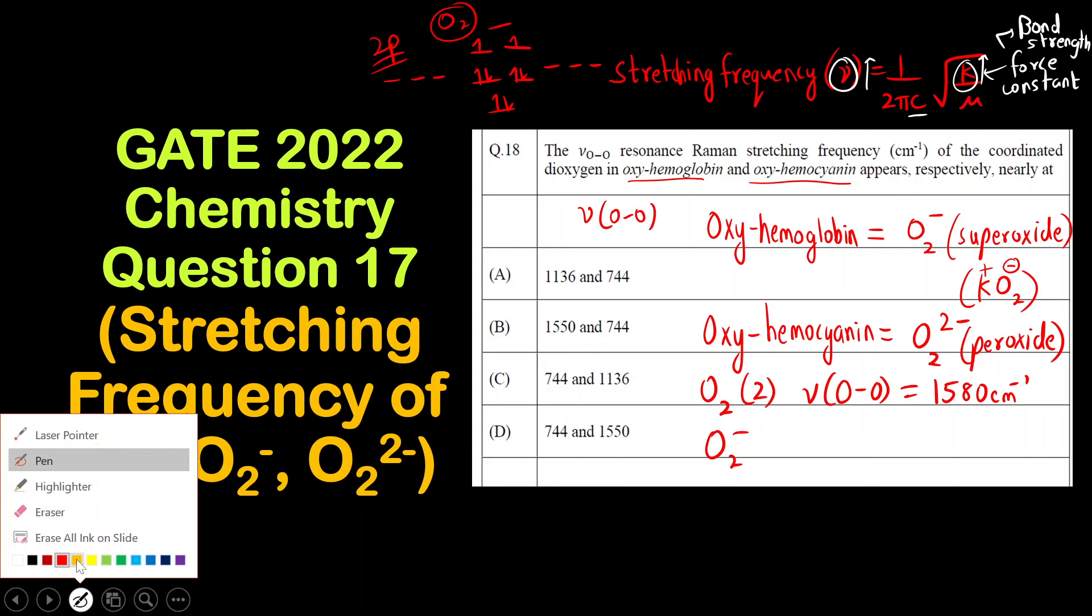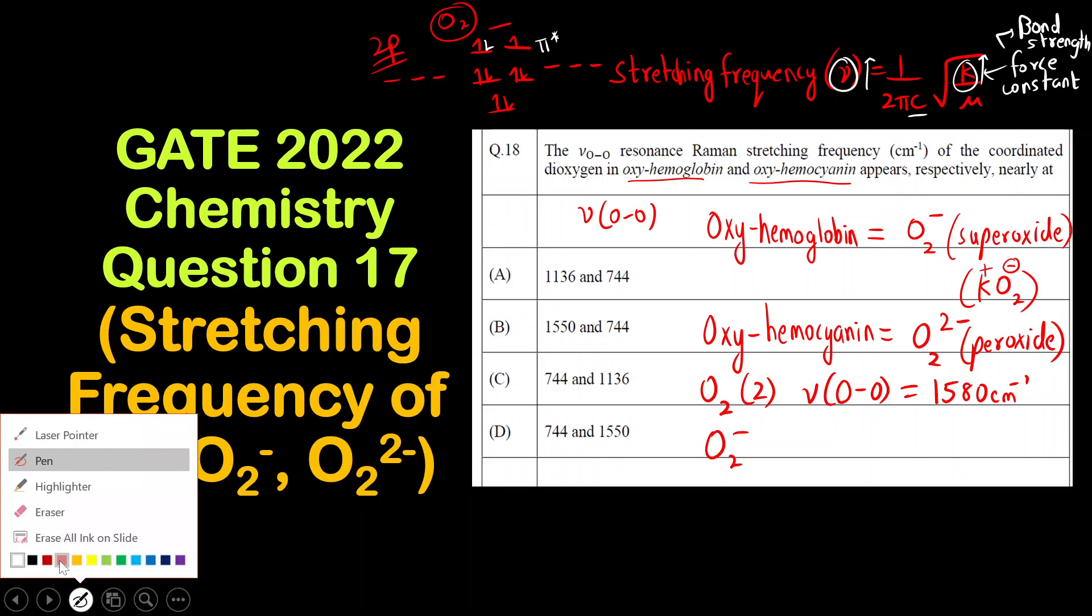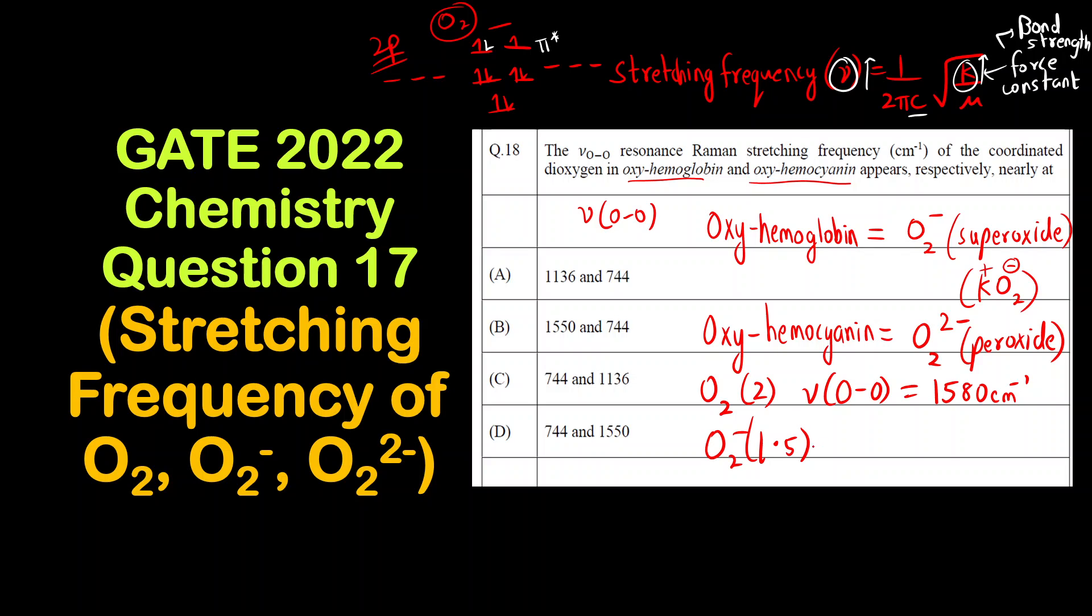Now O2 minus means we are adding an electron in the unstable π* orbital, the anti-bonding orbital, so the bond order will decrease. O2 minus bond order is 1.5.